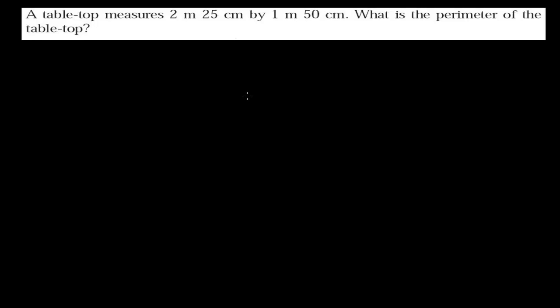Welcome friends. After learning to calculate the perimeter of different objects, now we can easily solve any kinds of word problems related to perimeter. So here is our first word problem. Let me read this: A tabletop measures 2 meter 25 centimeter by 1 meter 50 centimeter. What is the perimeter of the tabletop?